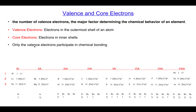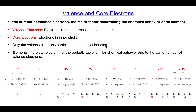It has to be noted that only the valence electrons participate in chemical bonding. Elements in the same column of the periodic table — belonging to the same group — have similar chemical behavior because of the same number of valence electrons. For example, hydrogen, lithium, and sodium are in the same group and have the same number of valence electrons. Similarly, group 2 elements share the same number, group 3 the same, and so on.